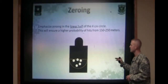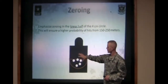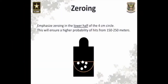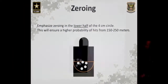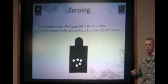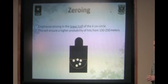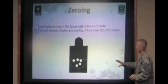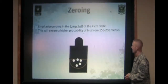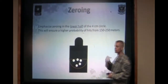When zeroing at 25 meters, we emphasize shooting five-shot groups and zeroing low in the four-centimeter circle on the center of the target. Zeroing low in that circle ensures that on those mid-range targets from 150 out to 200 meters, the shooter is not going to shoot over the shoulders of the target — those are the targets most commonly missed on the pop-up qualification range. By zeroing a little bit low in the four-centimeter circle, you're still achieving a good solid zero on the rifle, and it's going to keep your point of impact at mid-range targets in the high chest, not over the shoulders.